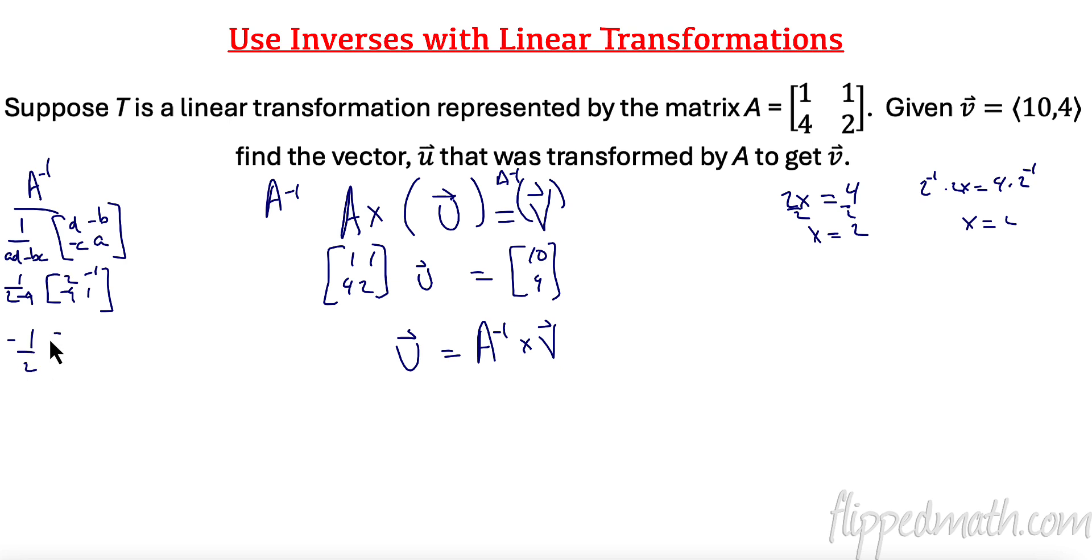So I have, really, negative 1 half times 2, negative 1, negative 4, 1. So my inverse is going to be negative 1, positive 1 half, 2, and negative 1 half.